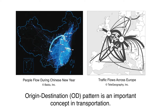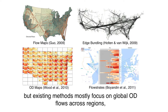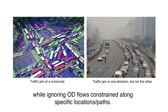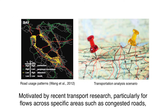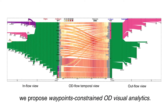Part 1: Motivation. Origin-destination pattern is an important concept in transportation. Many visual analytics methods have been proposed to study it. But existing methods mostly focus on global OD flows across regions, while ignoring OD flows constrained along specific locations or paths. Motivated by recent transport research, particularly for flows across specific areas such as congested roads, we propose Waypoints-Constrained OD Visual Analytics.